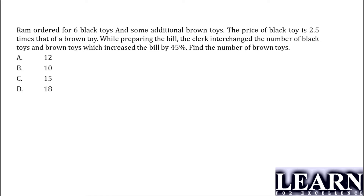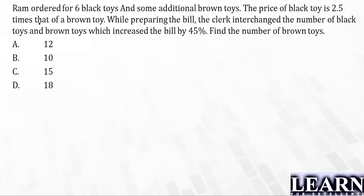Let's look at the question. Ramu ordered 6 black toys and some additional brown toys. The price of the black toy is 2.5 times that of the brown toy. Now the initial conditions: black toys is 6, brown toys I don't know — I'll take it as y. If the cost of the brown toy is x, then the black toy cost is 2.5x.